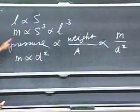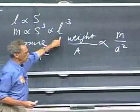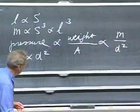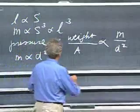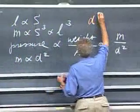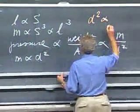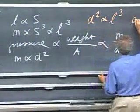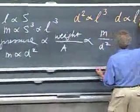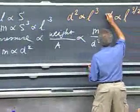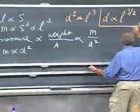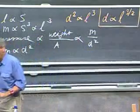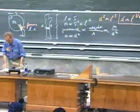Now compare these two: mass is proportional to l³ and also to d². Therefore, d² must be proportional to l³, and therefore the thickness of the femur must be proportional to l to the power three-halves — d ∝ l^(3/2). A very interesting result.